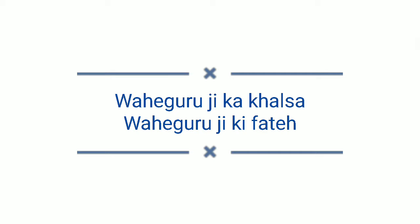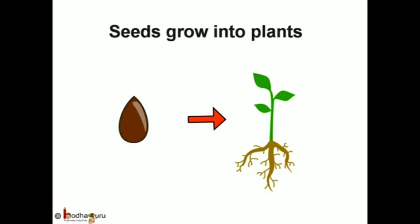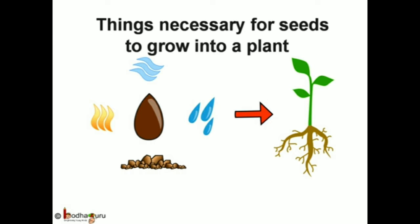Dear students, today we will discuss the process of germination of seeds one by one. So first of all, what is germination? Germination means when a seed is sown into moist soil and it begins to grow, this process is called germination.